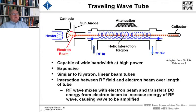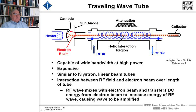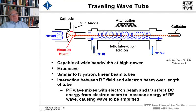Now we go to another class using another technique for high-power amplification: the traveling wave tube. Again we have a heater and a cathode, with electron beams emitted from the cathode. A gun anode directs the electron beam down a path where it interacts in a helical region, with RF in and RF out. These are very expensive — easily half a million dollars each — and capable of wide bandwidth. It's similar to the klystron as a linear beam tube, and the interaction of the RF field and the electron beam over the length of the tube is key to its operation.